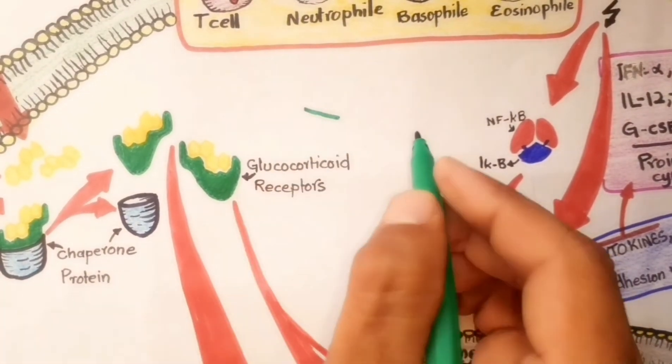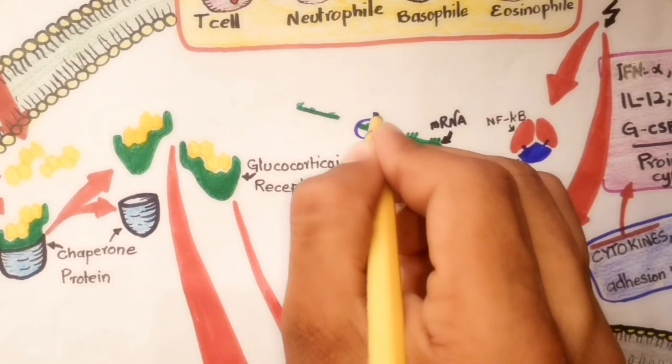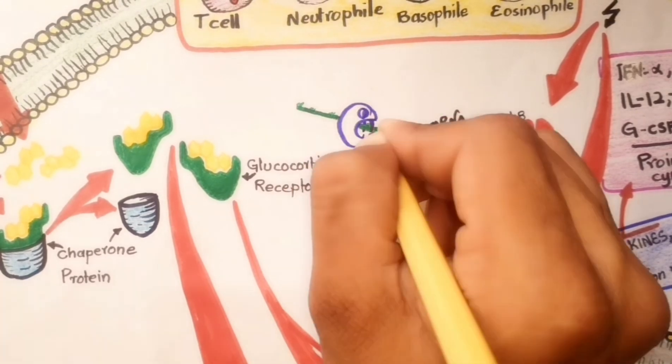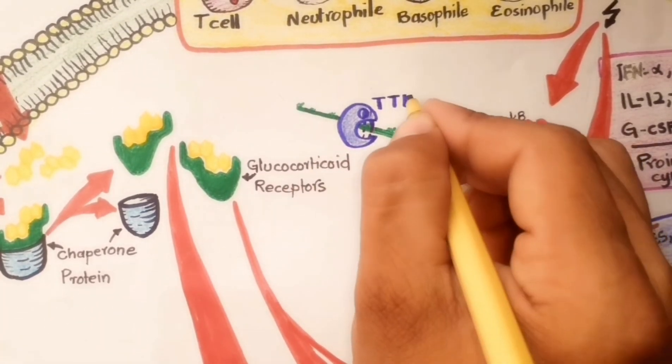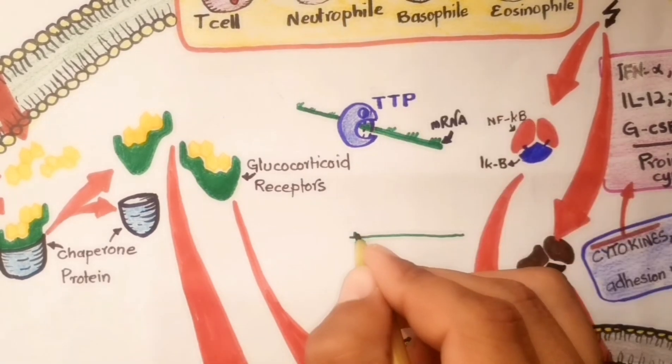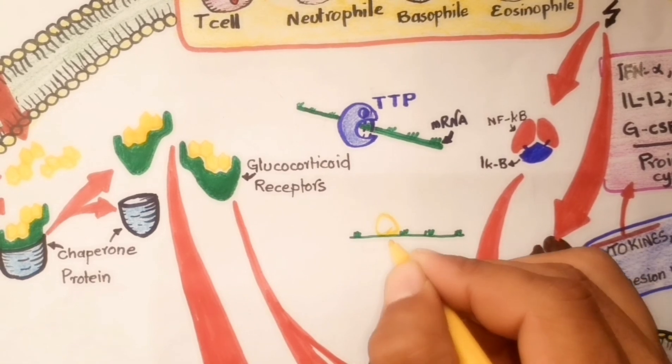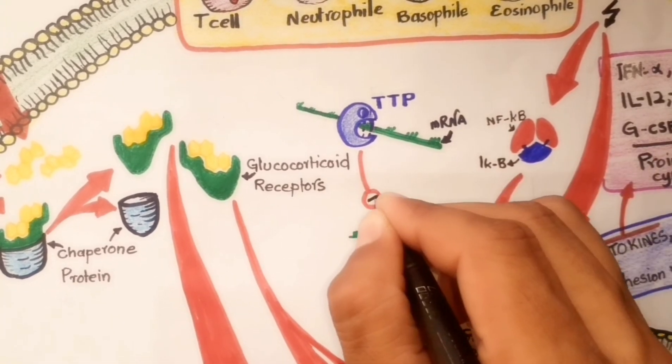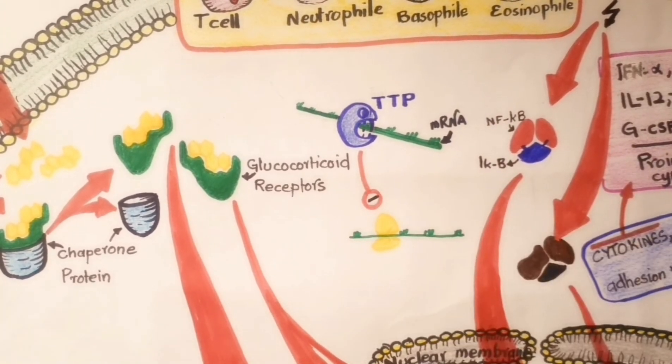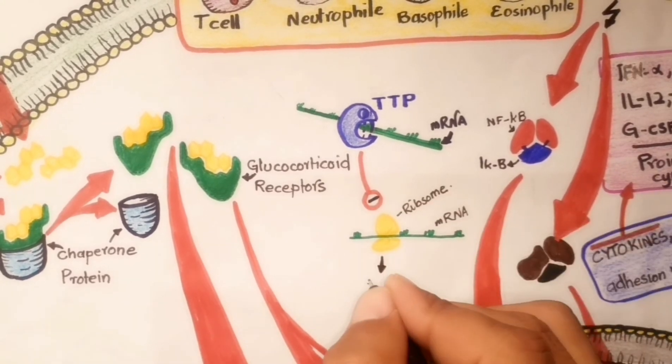In addition to this pathway, dexamethasone influences the mRNA stability of inflammatory genes by regulating the expression of tristetraprolin, abbreviated as TTP. TTP plays an important role by destabilizing the mRNA of many pro-inflammatory cytokines and targeting them for degradation. This allows dexamethasone to switch off the ongoing production of inflammatory proteins after the inflammatory gene has been activated.